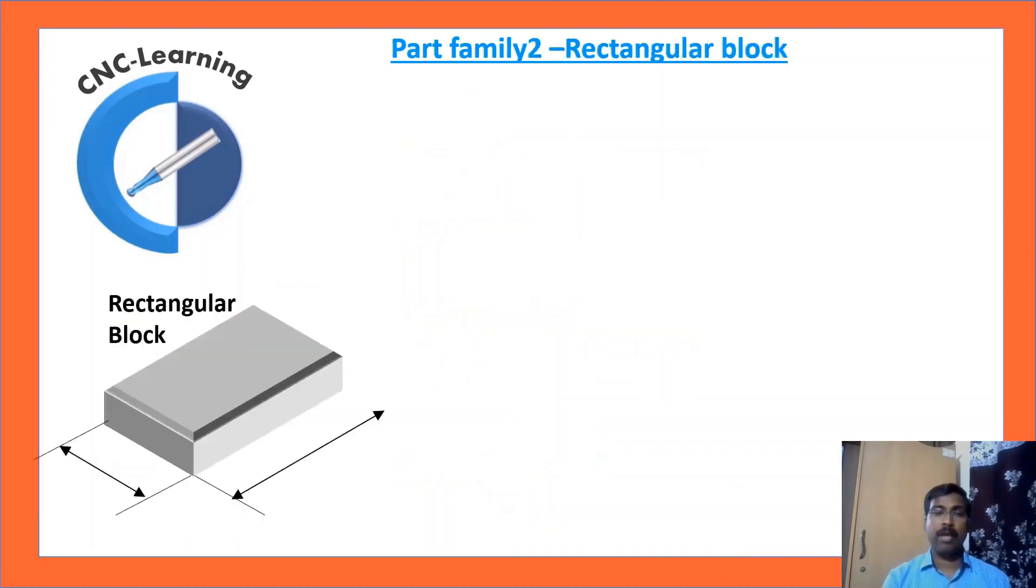Now, let us look another part family. It is a rectangular block where we will be doing the milling operation. A regular way of doing this is G01, X0, Y0, then Y50, F500, X100, Y0, X0 and then taking the tool up, G01, Z5, G28, G91, Z0 going to home.